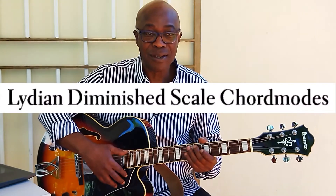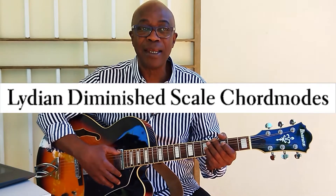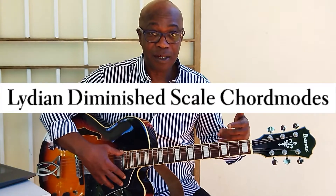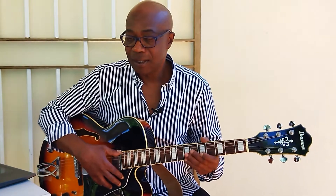Today I would like you to smile — smile from your heart because the topic is interesting. It's about the Lydian diminished mode. That is, revisiting the Lydian diminished at a higher level. Reading from Russell's book, it says the Lydian diminished scale is third in descending order of principal scales listed on chart A.